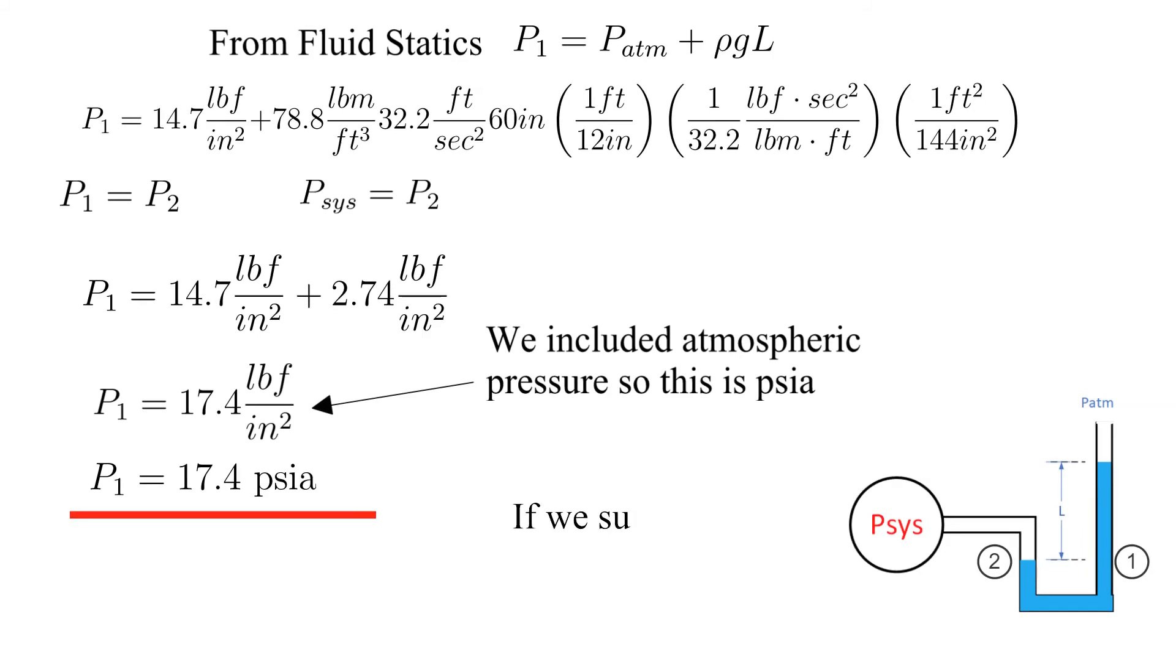To obtain gauge pressure, we subtract out the atmospheric pressure and get 2.74 PSIG.